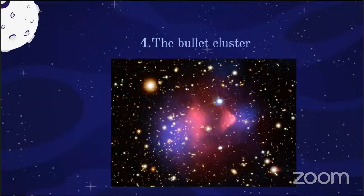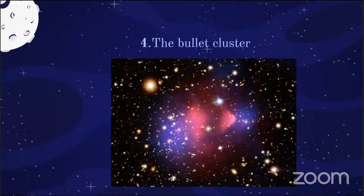The bullet cluster formed from a high-speed collision of two galaxy clusters. Optically visible matter leads to mass concentration near the center. However, gravitational lensing observations show mass is also present outside the luminous matter — leading to evidence for dark matter. Now Ramita will explain the limitations of ΛCDM.